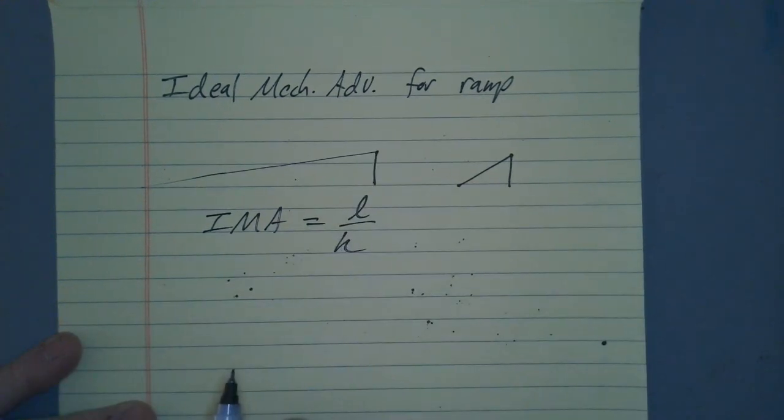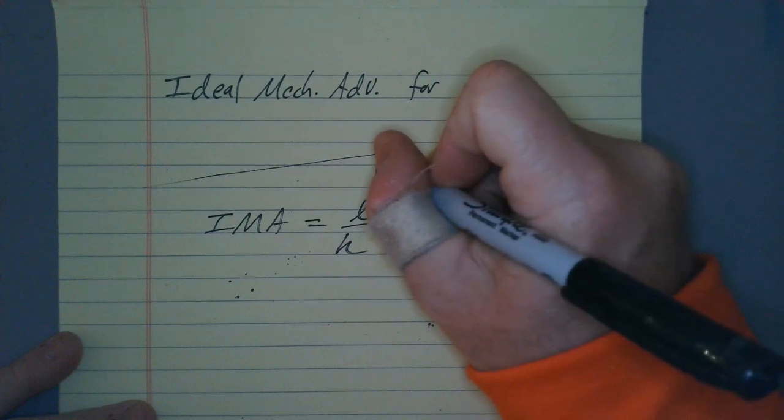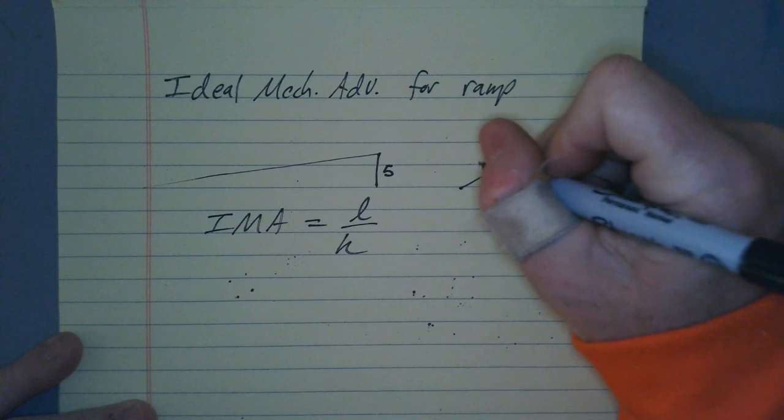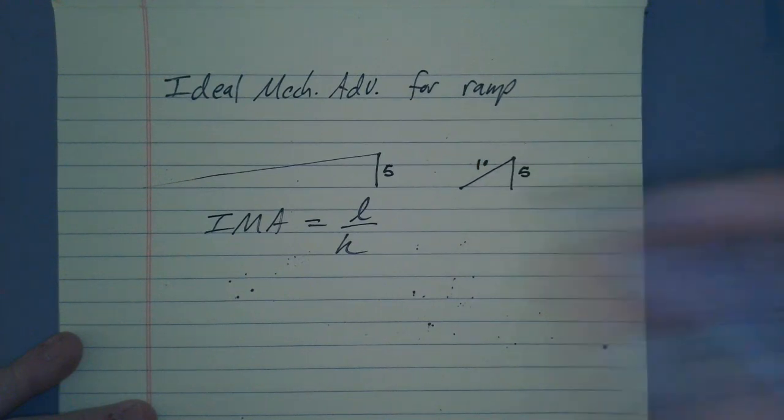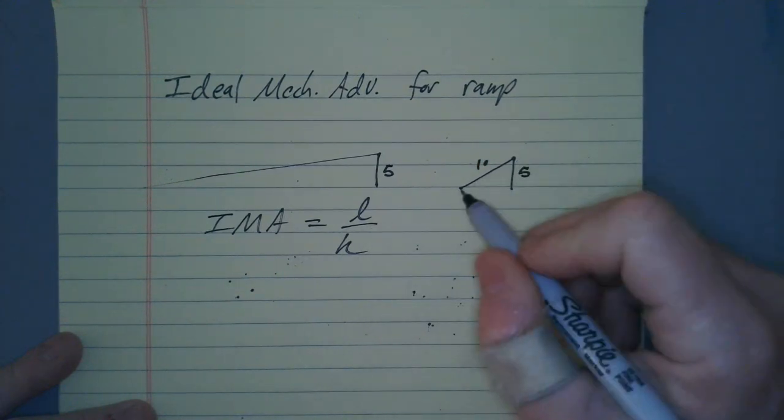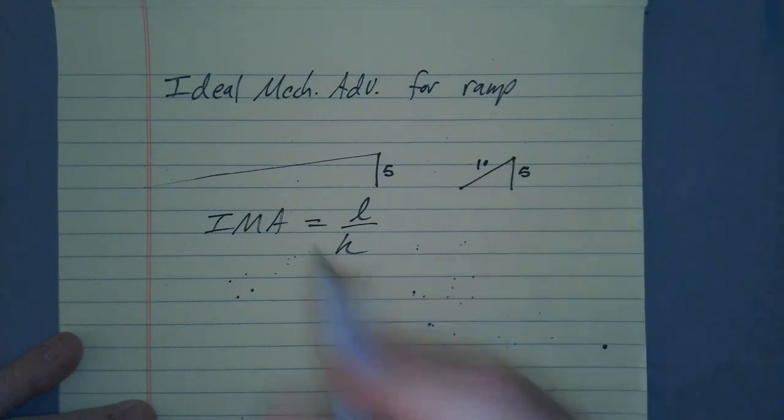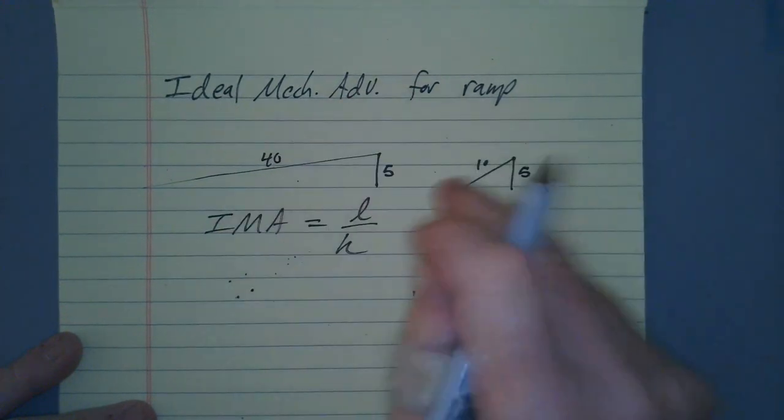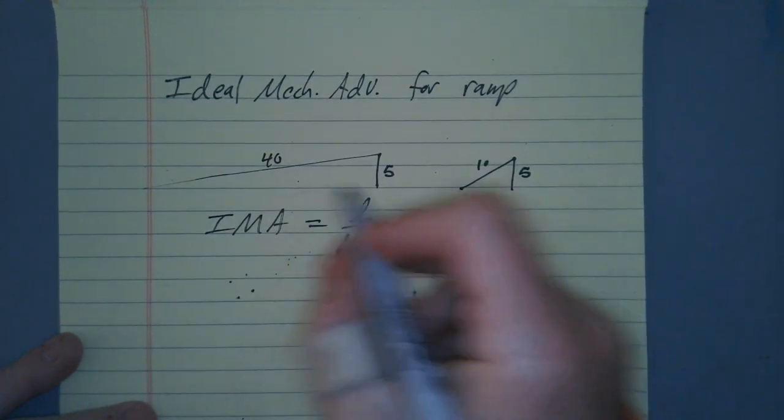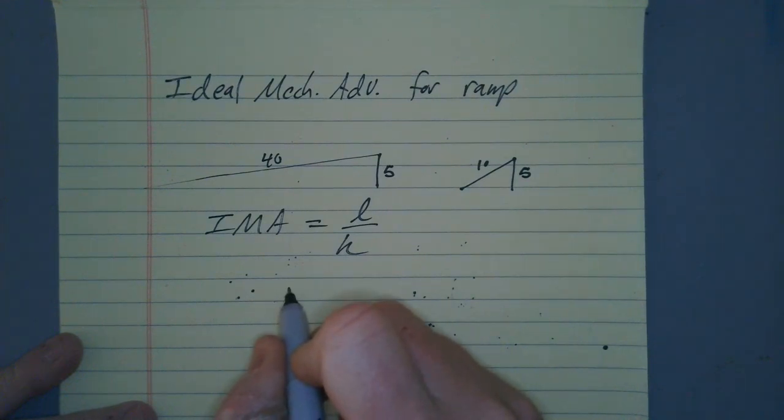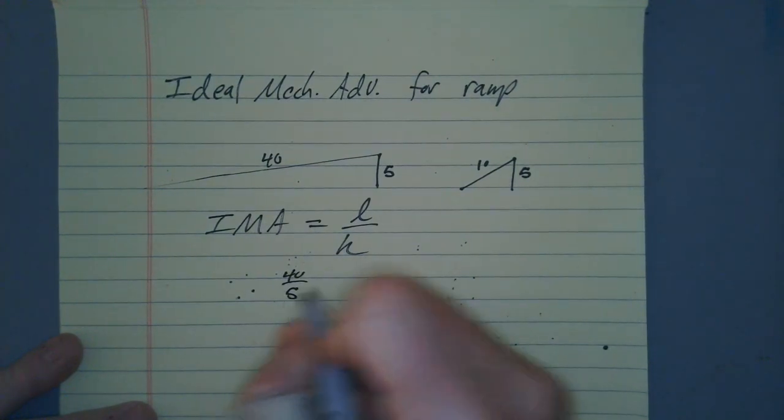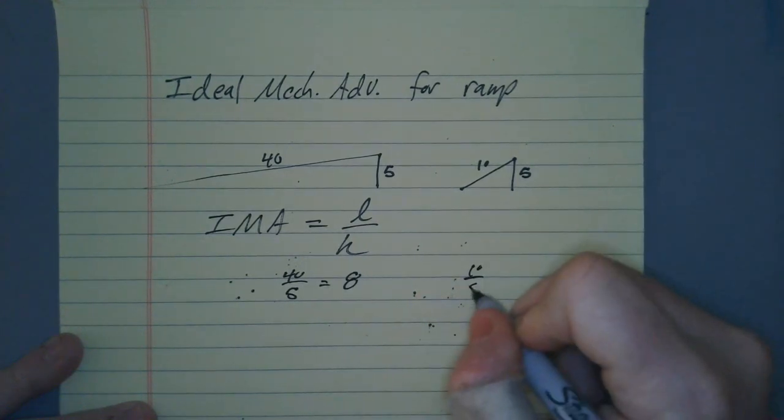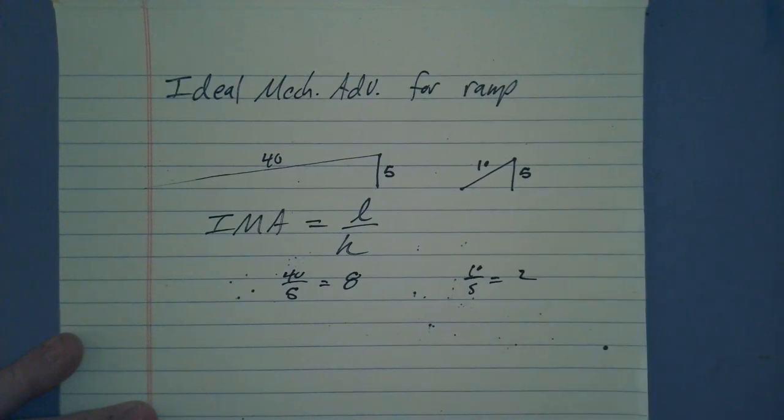Now, for both these two ramps, the height would be the same. Let's pick a random number. Let's pick, say they're five. And let's say the length here is 10. And remember, the length is the length up the ramp, how long the ramp actually is. Let's say the length of this one is, I don't know, estimating, let's say it's 40, four times that. So, the ideal mechanical advantage for this one is going to be 40 divided by five, which would give me an ideal mechanical advantage of eight. This one would be 10 divided by five, ideal mechanical advantage of two.